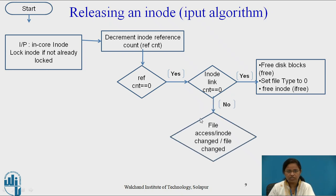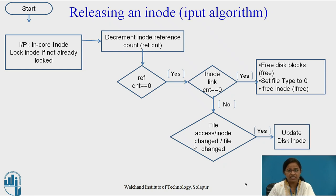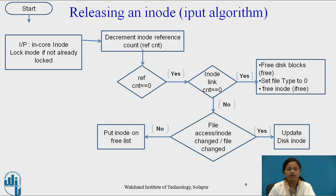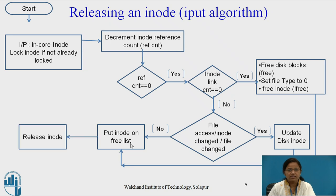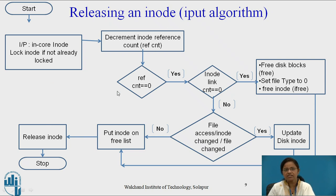If the link count is not equal to 0, then check whether the file access permissions have been changed, whether the i-node contents are changed, or whether the file contents are changed. If yes, update the copy of the disk i-node by copying the content of the in-core i-node into the disk i-node. Then put that i-node on the free list. By putting the i-node on the free list and releasing it, the kernel can stop. In this way, the iPUT algorithm releases the i-node.